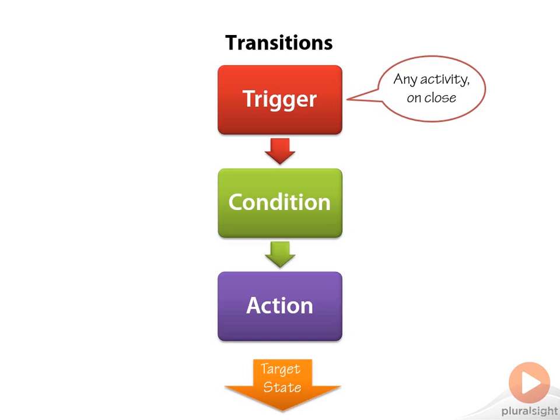In this simple scenario of a transition, you have an optional condition that you can apply. The condition is simply an expression that's going to return a Boolean value — should I go and take some action, should I move to this target state? Maybe you have a trigger that occurs, like a timer or a delay, and you want to run this condition and check something: the delay's expired, should I move on to this state? Or maybe you've received a message over WCF, and the condition checks that message to decide if it's okay to follow this path and go to that target state.